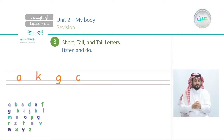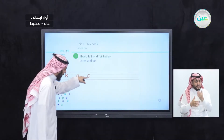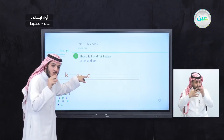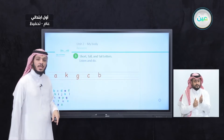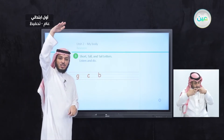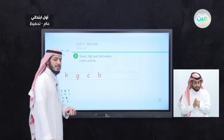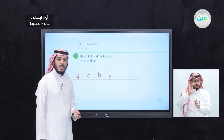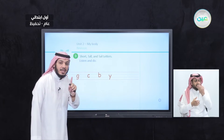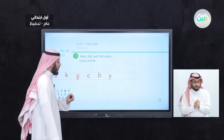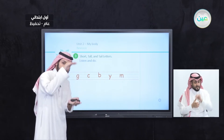Can you tell me the letter C? Is it short, tall, or tail? It is short, because we have the letter C between the two gray lines from number two up to number three. This is short. What about B? Tall. That's right. So we have C short. What about B? It is tall. What about the letter Y? It is tail. Say it with me: tail. What about the letter M? Short. Excellent.